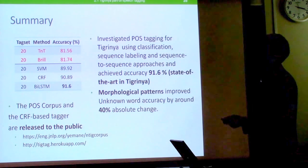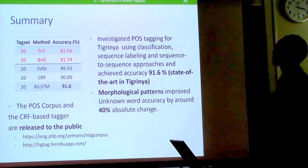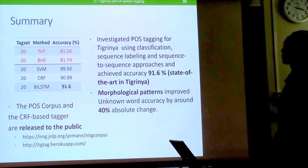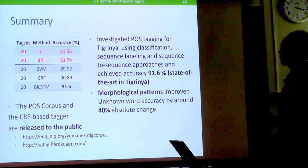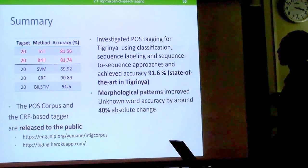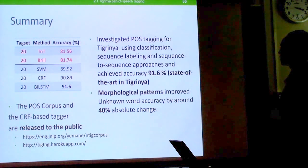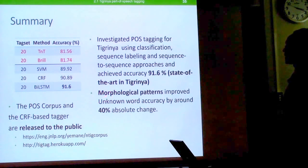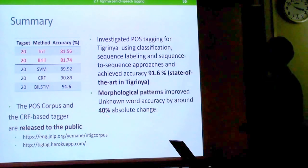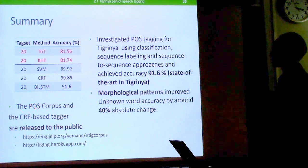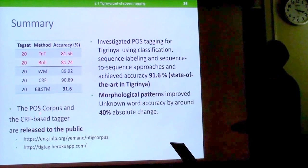In summary, we investigated POS tagging for Tigrinya using classification, sequence labeling, and sequence-to-sequence approaches, achieving 91.6% accuracy — currently state-of-the-art in Tigrinya. We improved over our previous results, and showed that morphological patterns improved unknown word accuracy by about 40% absolute change. The corpus and CRF-based tagger are released to the public.